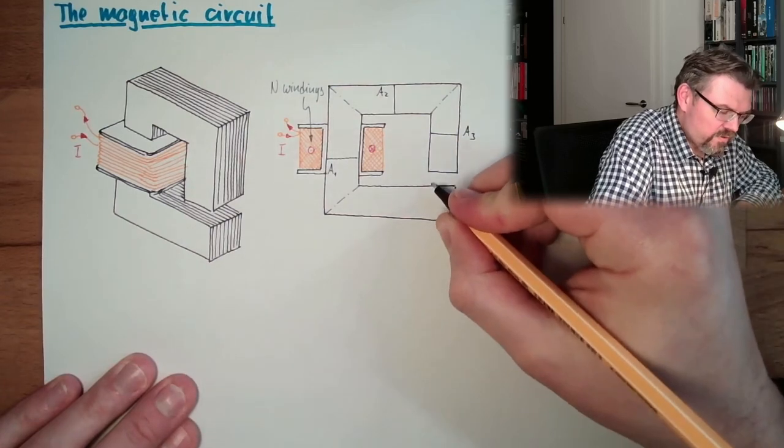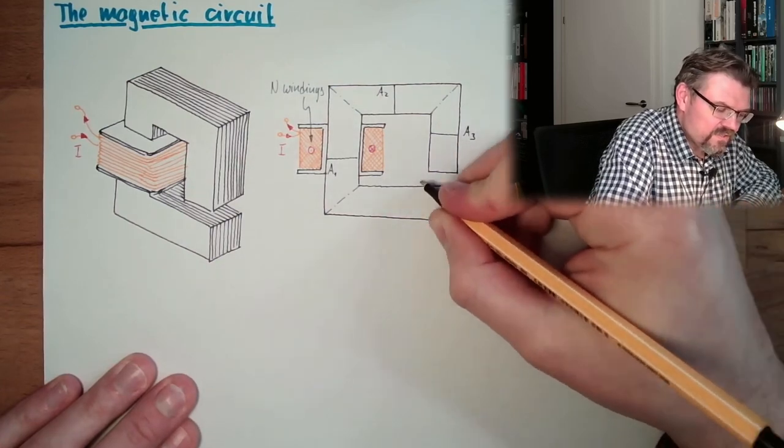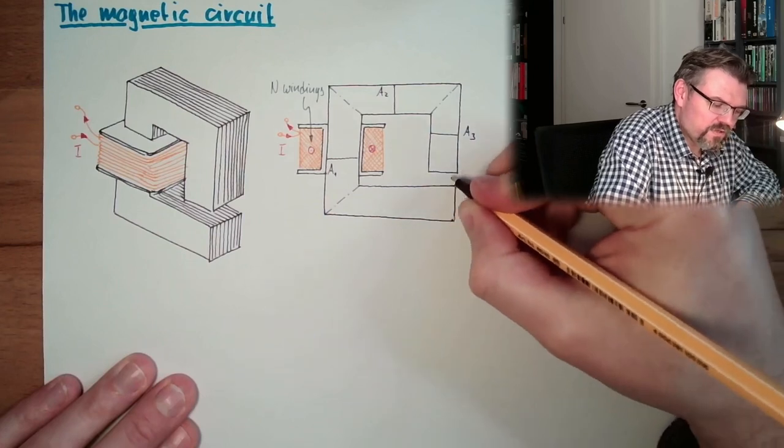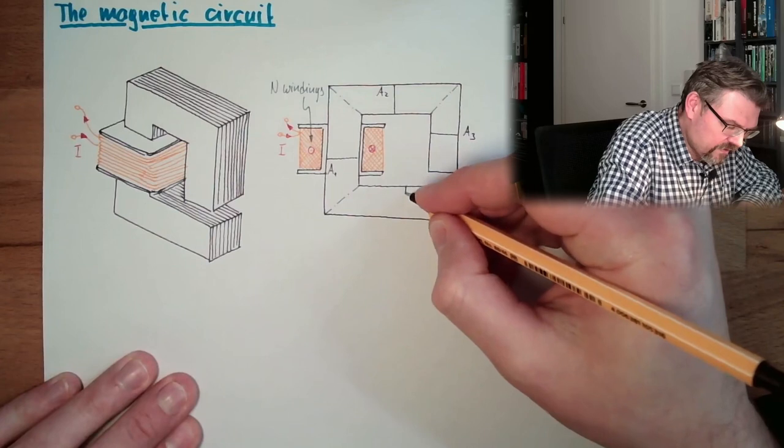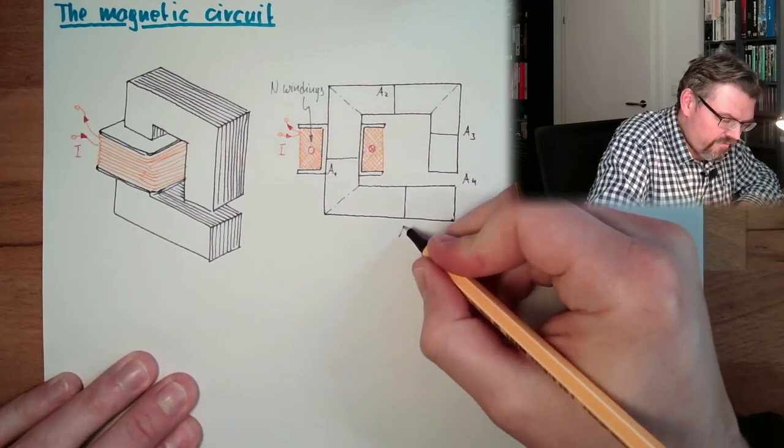I have here a certain area which is not covered. So there's an air gap with an area A4. And here I have a last area A5.